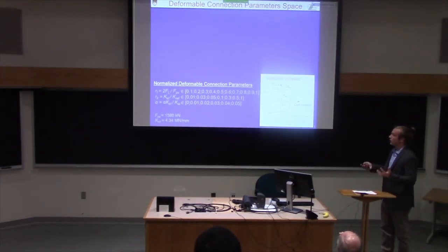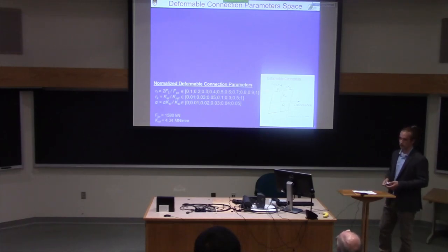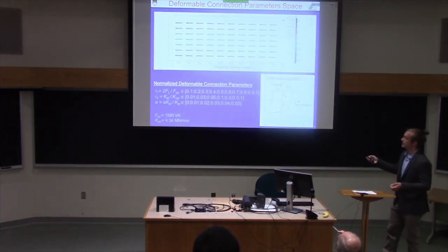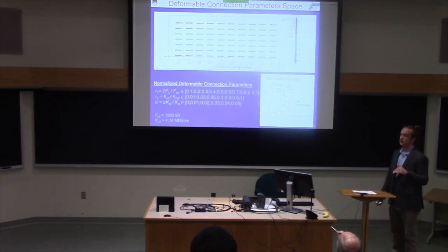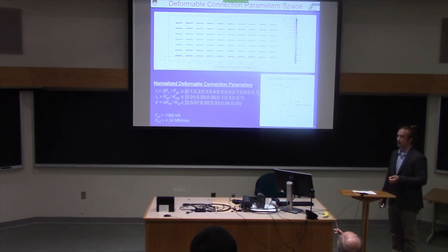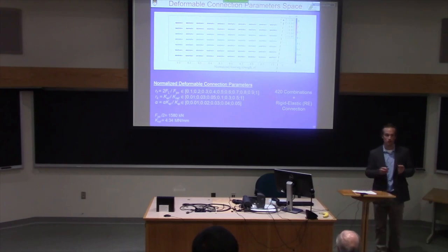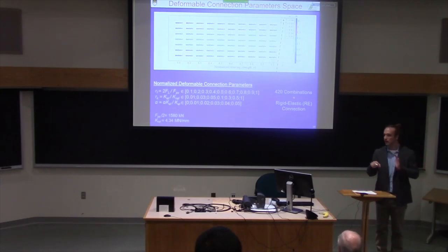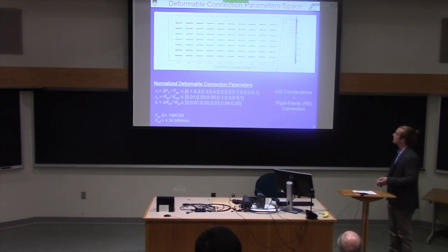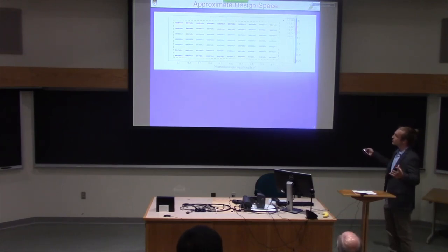To identify which parameter combinations work, we explored a broad range shown graphically: the x-axis shows normalized limiting strength, colors represent normalized elastic stiffness, and markers represent the post-elastic stiffness ratio. From 420 combinations — always including a rigid elastic connection case representing the conventional building system for direct comparison — we were able to converge on an approximate feasible design space.